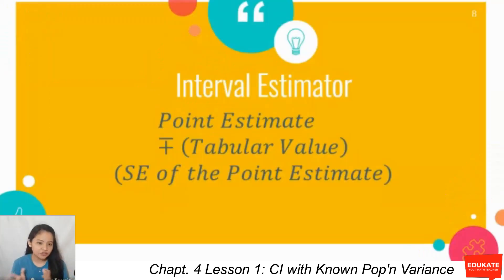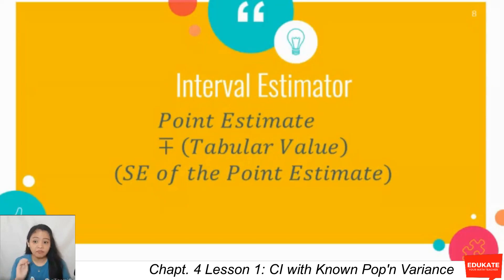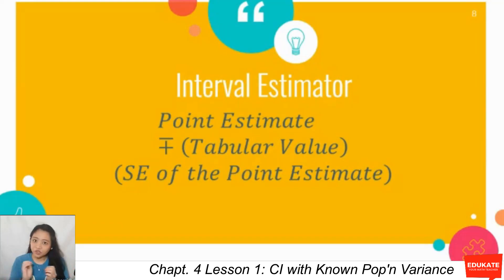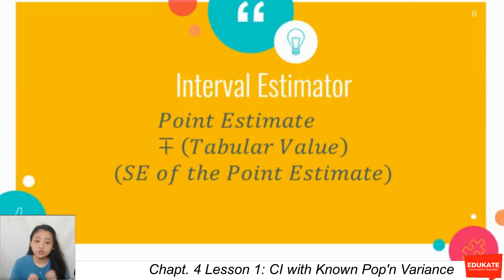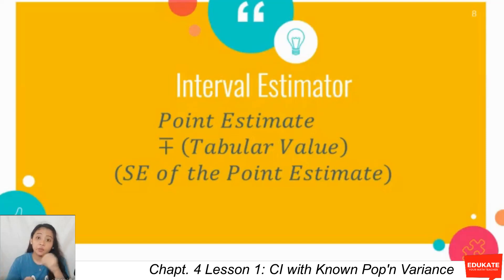In general, an interval estimator is constructed as follows: your interval estimator is point estimate plus or minus the product of your tabular value and your standard error of the point estimate. For the population mean, the point estimator is the sample mean — ang gagamitin mo para ma-estimate yung population mean is yung sample mean. The standard error of the sample mean will be used in the computation.